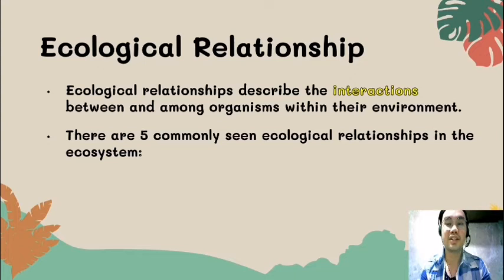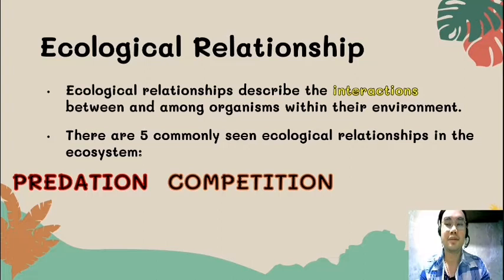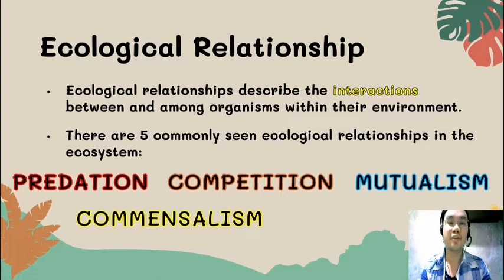The five ecological relationships are: first, predation; next, competition; we also have mutualism; the fourth one is what we call commensalism; and lastly, we have parasitism.